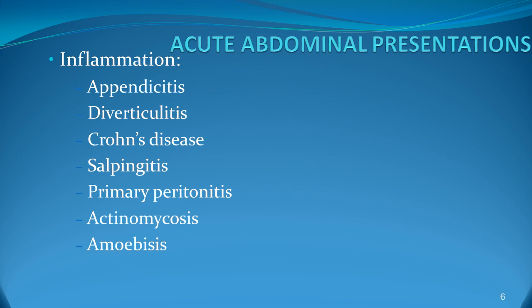Primary peritonitis could be due to various causes and patients present with sudden onset of acute pain in the abdomen. Actinomycosis and also amoebiasis — there is a history of diarrhoea and the patient might have a history of travel to the tropics or the patient can be in a tropical region.